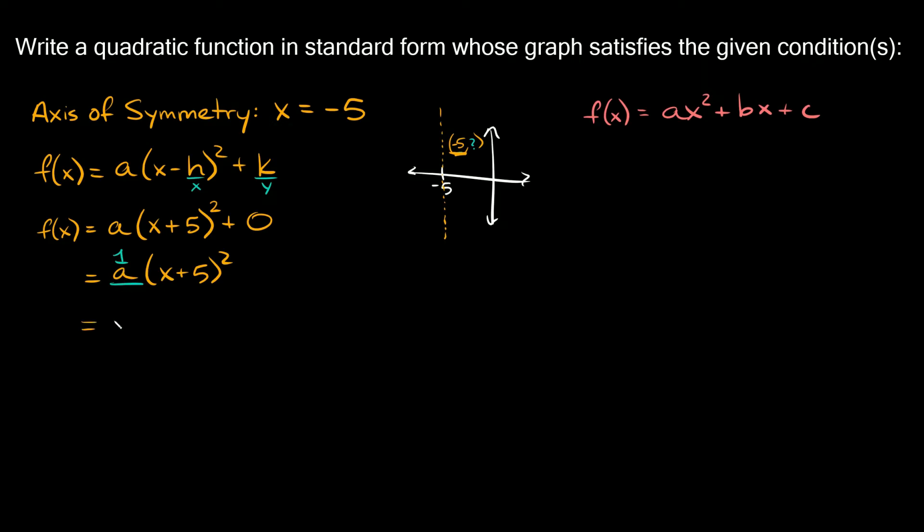So this is going to be equal to 1 times x plus 5 squared. And whenever you multiply by 1 it doesn't change, so 1 times x plus 5 squared is simply equal to x plus 5 squared. This is all we really have to solve for now.